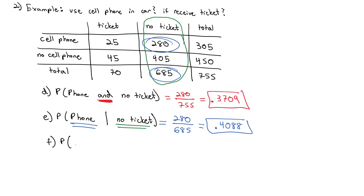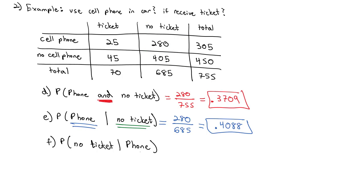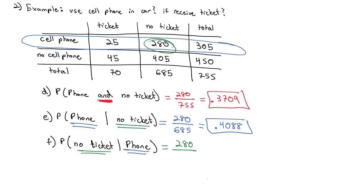We can also switch the order of the condition and ask: what's the probability that someone got no tickets given they used their cell phone in the car? Now the given information is they used the cell phone, so the only thing that exists for this problem is the cell phone row. In that cell phone row, we want to know how many have no tickets — again, that's 280. But this time it's out of the phone total of 305, because we divide by the given information. So no tickets given they used the cell phone is 0.9180.